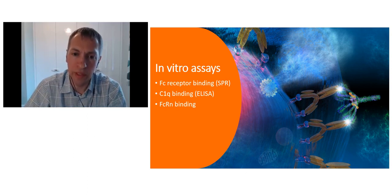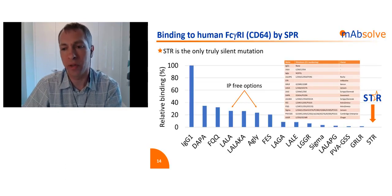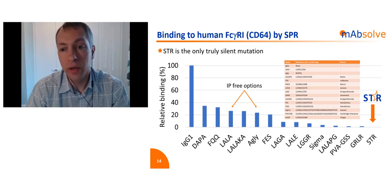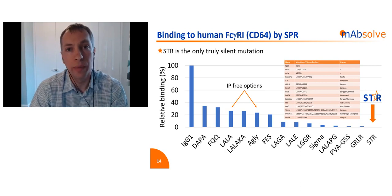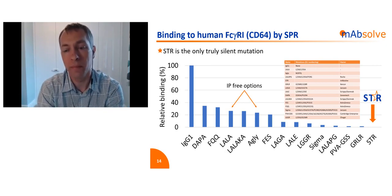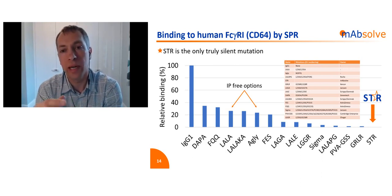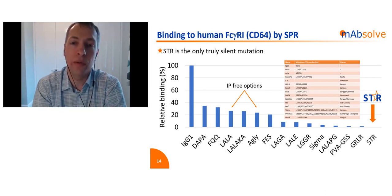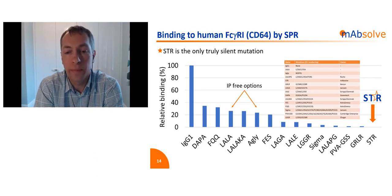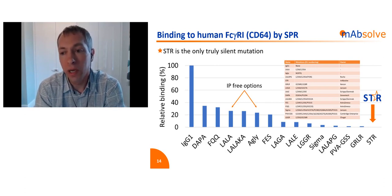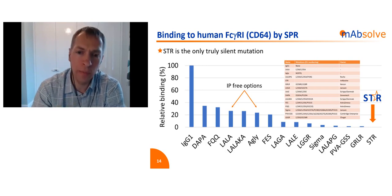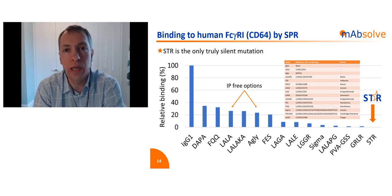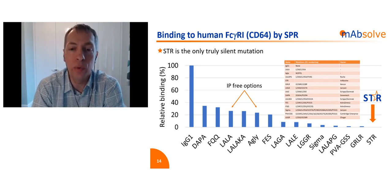We started with in vitro assays looking at FC receptor binding, C1Q, and FCRN. We focused on proprietary variants that have been into the clinic and those widely cited, and ran all of them through our BioCore assay for binding to FC gamma R1. All of them show some degree of residual binding. Some, like LaLaPG, are very low. STR, by comparison, is zero. The IP-free options of LaLa and AirGly don't perform very well in this assay. It was also a surprise that other proprietary variants performed quite poorly, despite publications making statements along the lines of 'FC receptor binding has been completely abolished.'